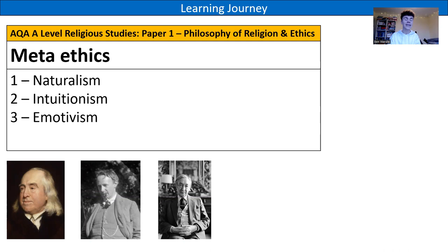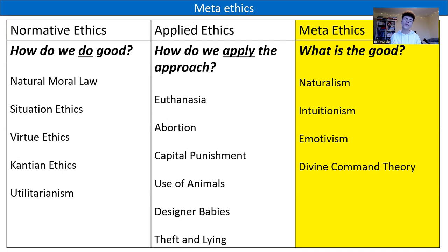Today's video covers those three main approaches: naturalism, intuitionism and emotivism. We've got these three tiers of ethics: normative ethics, applied ethics and meta-ethics. Meta-ethics is at the very top because this is your big fundamental question — taking that step back and asking what is the good? There is a separate video for those doing the AQA specification on divine command theory. The other tiers are normative ethics — how do we do good — and applied ethics — how do we apply the good.